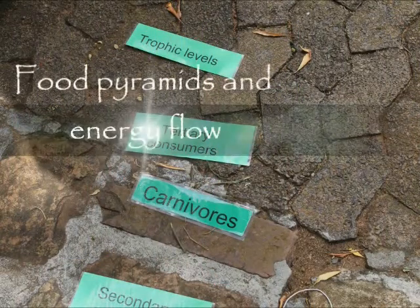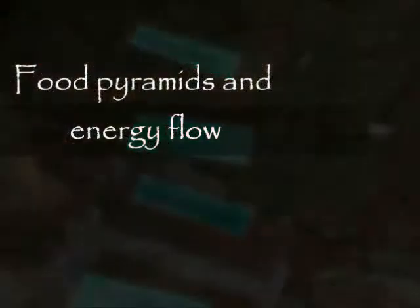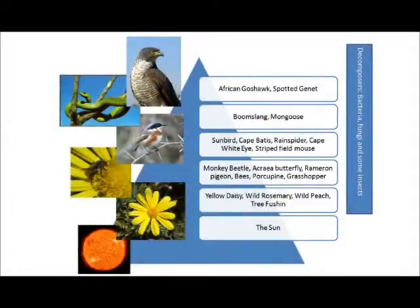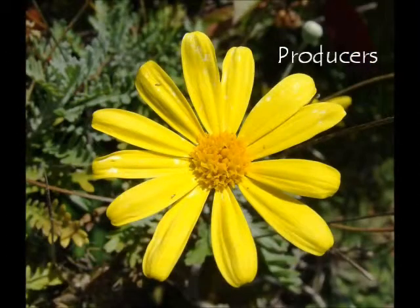This food pyramid shows the food chain in a fynbos environment like that at Kirstenbosch. The organisms are arranged in order of trophic level, except the decomposers which are separate and consume everything once it dies — in this way they recycle energy back into the pyramid. The producers are plants which use the sun's rays to make food by photosynthesis.